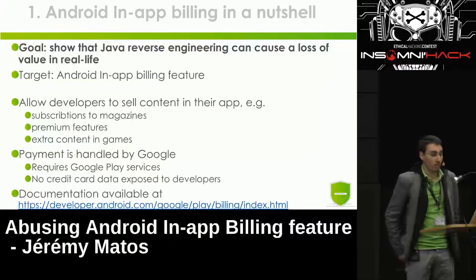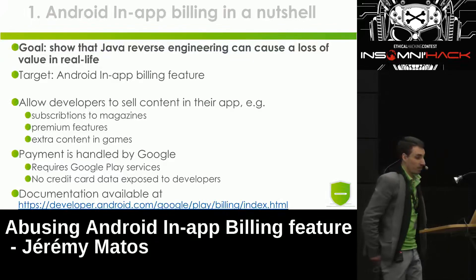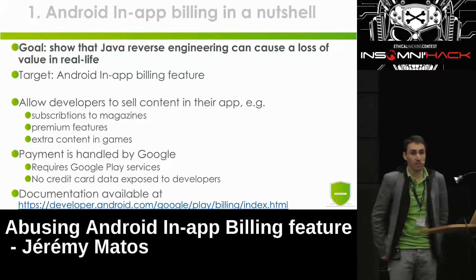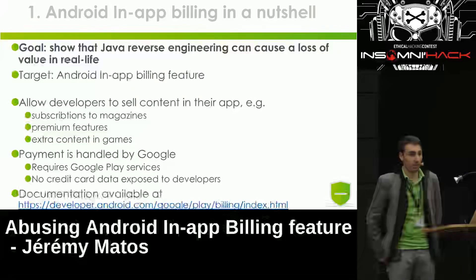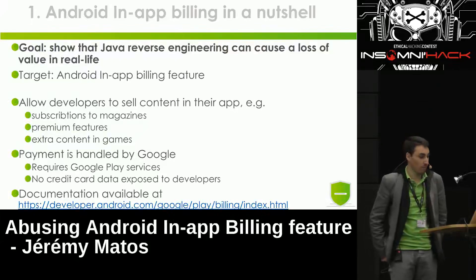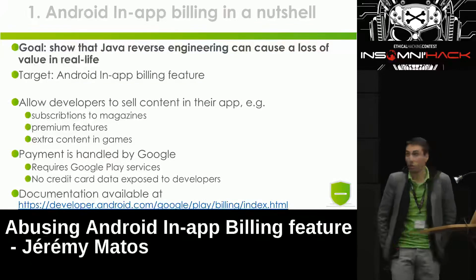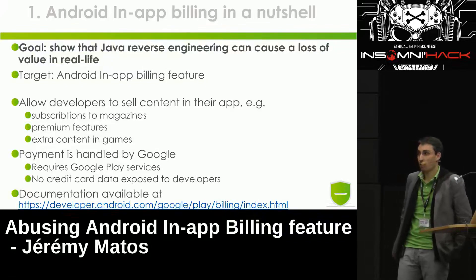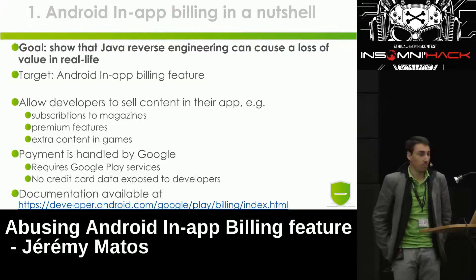Java reverse engineering is a real threat for Android applications. Most people say they don't really care, but people start to care when there is money at stake. The perfect target for this is what's called the Android in-app billing feature — it's an API for Android developers so they can sell content directly in their application. It's a copy of what Apple did first. You can subscribe to magazines, pay for premium features, or buy bonus content in a game, and Google handles all the payments.